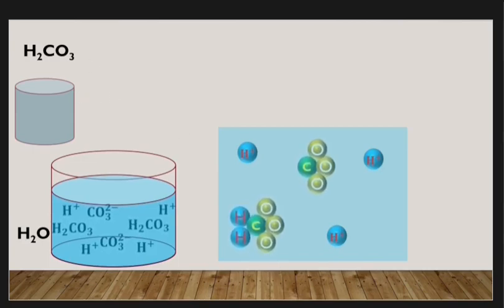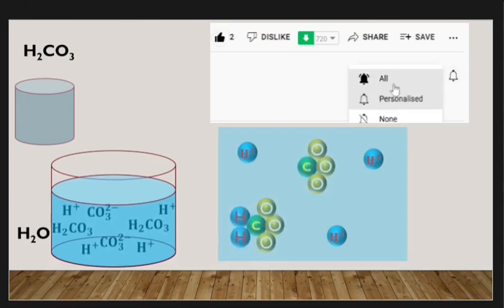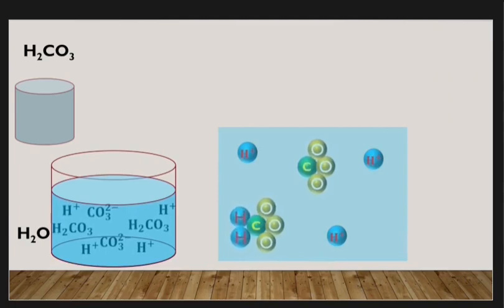Weak acids don't produce a lot of hydrogen ions, which is why they are weak — they produce only few hydrogen ions, and it is hydrogen ions that give acids their characteristics. We've reached the end of this video. If you enjoyed it, give it a like and comment below. Please subscribe so you don't miss the next video on examples of strong and weak bases and how they ionize in aqueous solution. Thanks for watching!